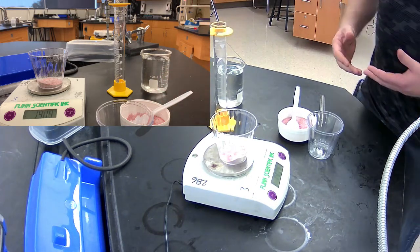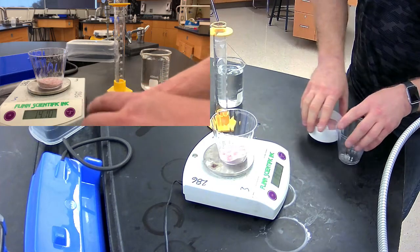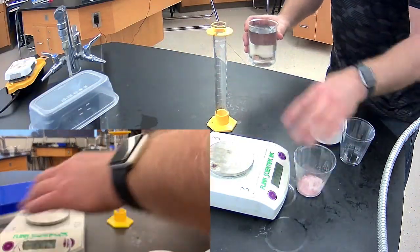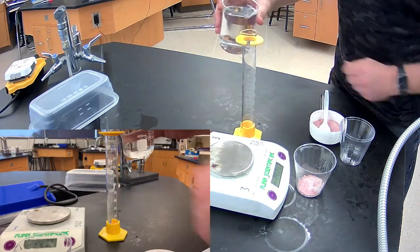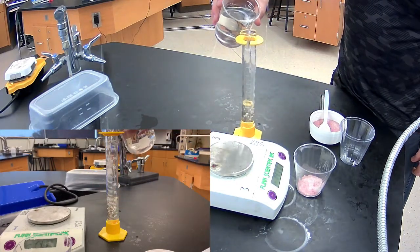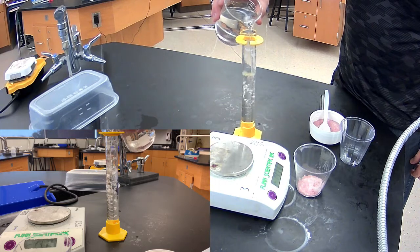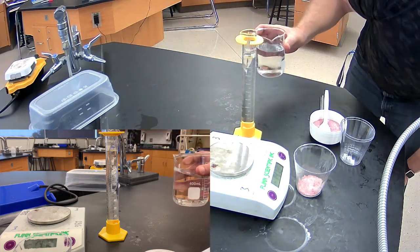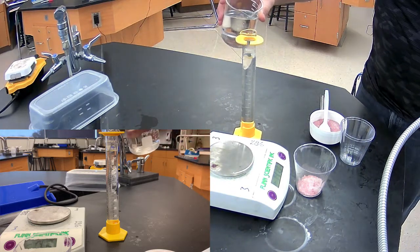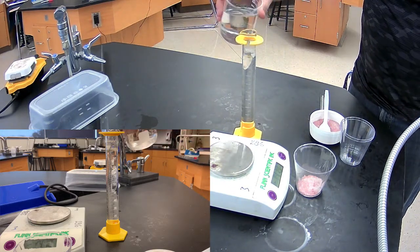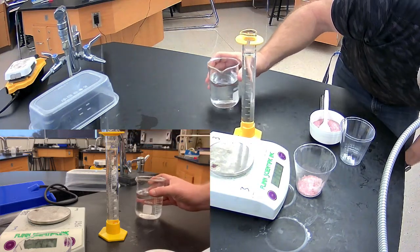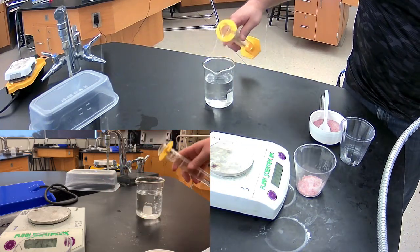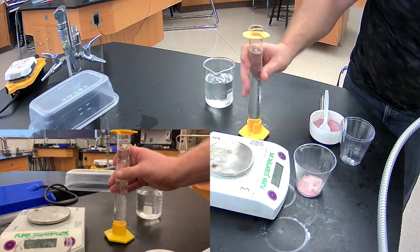And then now I'm going to add that to 100 milliliters of water. So we'll leave that out of the way and we're going to get 100 milliliters of water to that. And again, measuring from the bottom of the meniscus, that looks a little bit high. Looks really good.